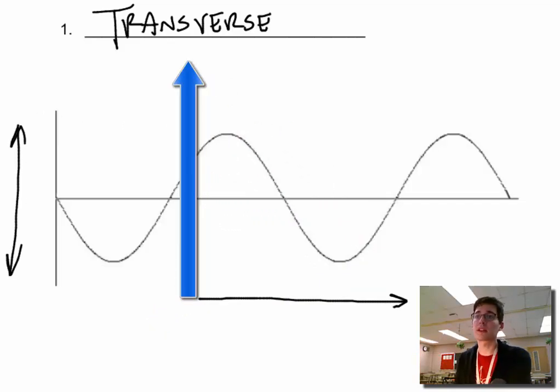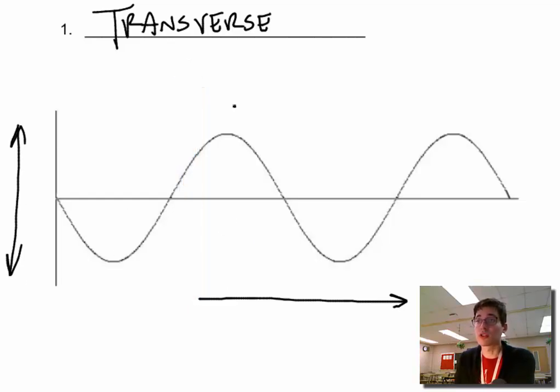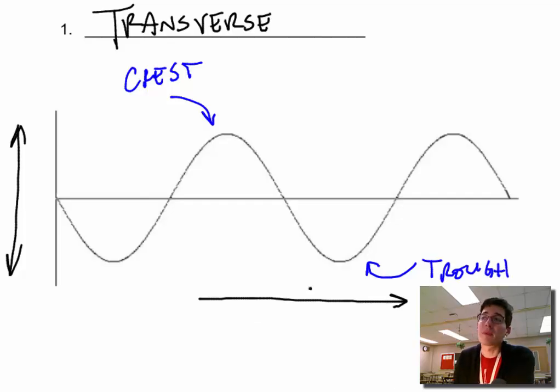So the wave motion, it has this up and down motion, is offset 90 degrees from the wave direction. Now there's a few ways to label this thing up. I'm going to hit a couple of them. The tops of these waves, so the top there, this is called the crest. And the bottom is called the trough. And you can look up any diagram, Google transverse wave, and you can label this up yourself.